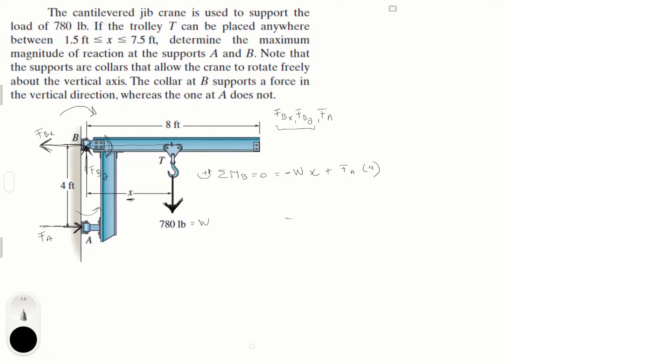Now if we solve for F of A, we get that F of A is equal to, we got to plug in the 780 for W, of course, and we get that F of A is equal to 780x over 4, or is equal to 195x.